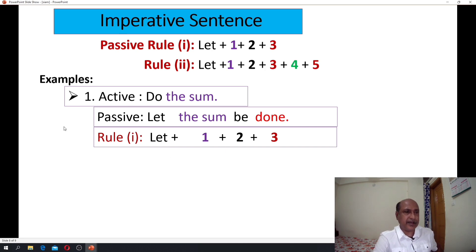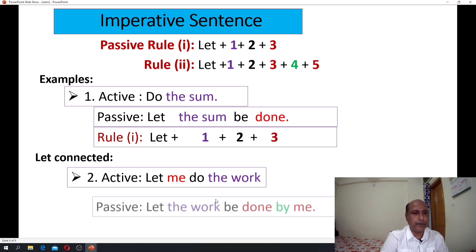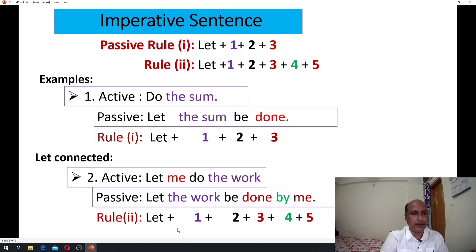Let's see another example. Let's do the imperative sentence. Active voice: let me do the work. Passive: let the work be done by me. Rule: let it. One, two, three, four, five. One, object-subject. Two, be verb. Imperative be verb is be. Three, main verb past participle done. Four, peer position. Five, subject-object. Okay. The assertive, interrogative, imperative, three sentence reactive transcripts you can do.